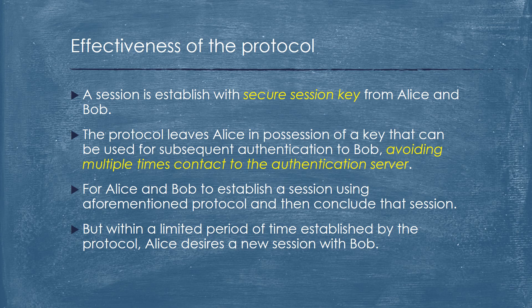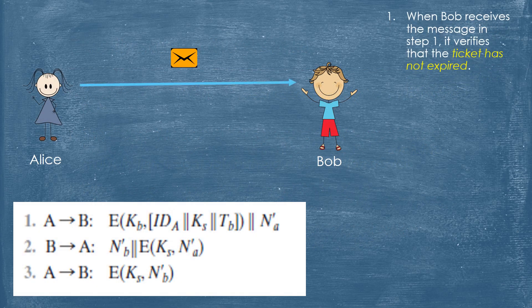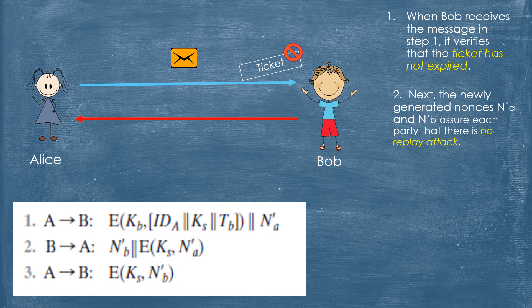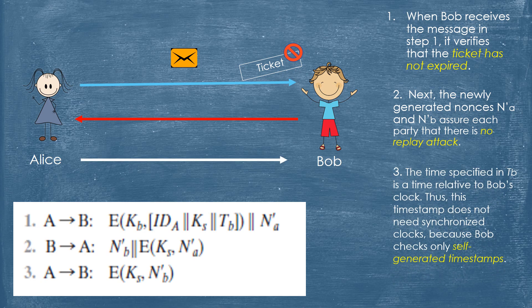For Alice and Bob to establish a new session using the aforementioned protocol within a limited period of time established by the protocol: Step 1: When Bob receives the message, it verifies that the ticket has not expired. Step 2: The newly generated nonces assure each party that there is no replay attack. Step 3: The time specified in TB is relative to Bob's clock, so this timestamp does not require synchronized clocks because Bob checks only self-generated timestamps.